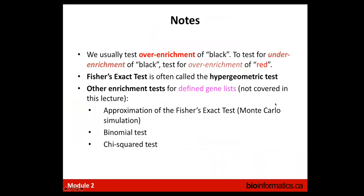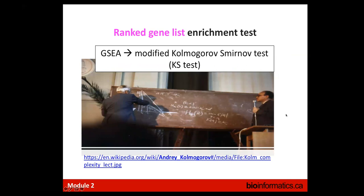As a final note on gene list enrichment: we are looking for over-enrichment of pathways. In rare cases people look for under-enrichment, which is possible by inverting the labels. The test may also be named the hypergeometric test, and some tools use approximations of Fisher's exact test.